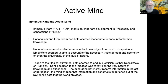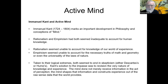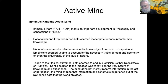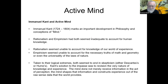Rationalism and empiricism both seem inadequate to account for human knowledge. Rationalism seems unable to account for knowledge of the world of our experience, whereas empiricism seemed unable to account for the necessary truths of math and geometry, and even the universality of natural laws. Taken to their logical extremes, both seem to end in skepticism — the skepticism of Descartes or the skepticism of Hume. Kant's solution to the impasse was to revision the very nature of knowledge and experience.